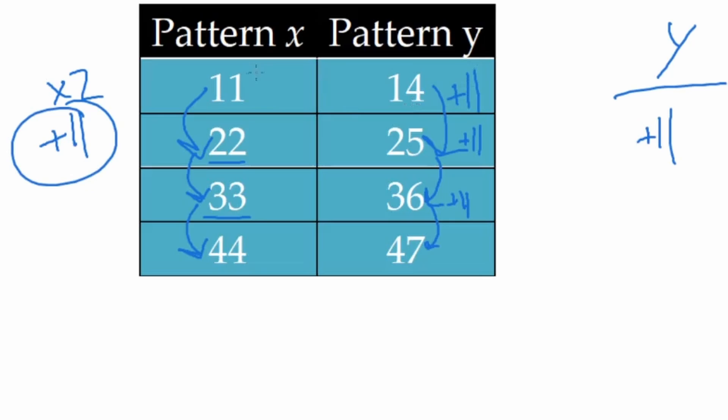The corresponding terms in the same level also show a relationship. 14 and 11, what's the relationship between those? Well, 14 is 3 greater than 11. Now 22 and 25, how are those related? Well, 25 is 3 greater than 22. When I say plus 3 right here, I mean that 22 plus 3 is 25. That's why I've got the plus 3 showing.